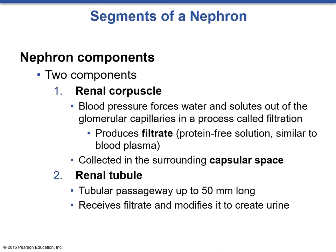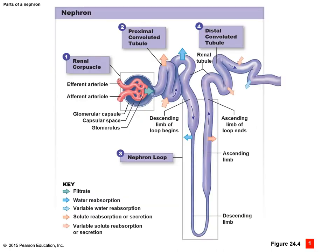From the corpuscle it drains into the renal tubule, which is roughly 50 millimeters long. The renal tubule is a passageway consisting of the proximal convoluted tubule, the loop of Henle, the distal convoluted tubule, and then the collecting duct. It receives the filtrate and modifies it throughout to create urine. In practice, the nephron is coiled and folded on itself, so the distal convoluted tubule sits next to the renal corpuscle — it's called 'distal' simply because it is further away.